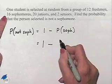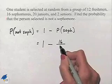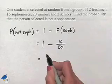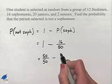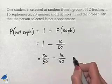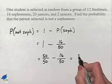We have 16 sophomores in our group out of our total of 50 students. We can subtract by noting that 1 is equivalent to 50 out of 50. And now we subtract in the numerator to give us a value of 34.